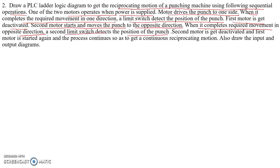When it completes the required movement in the opposite direction, a second limit switch detects the position of the punch and the second motor is deactivated. At the same instant the first motor is started again and the process continues, giving us a continuous reciprocating, to-and-from motion. We also need to draw the input and output diagrams.